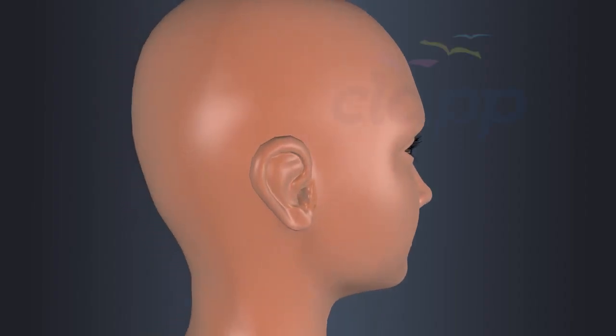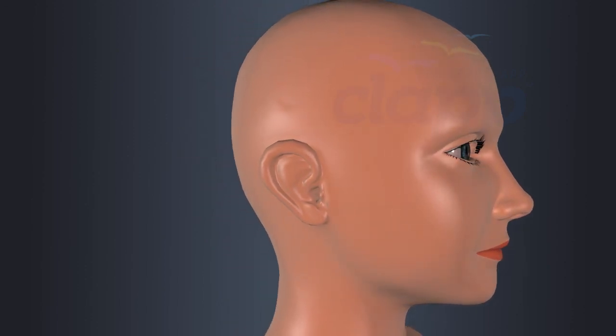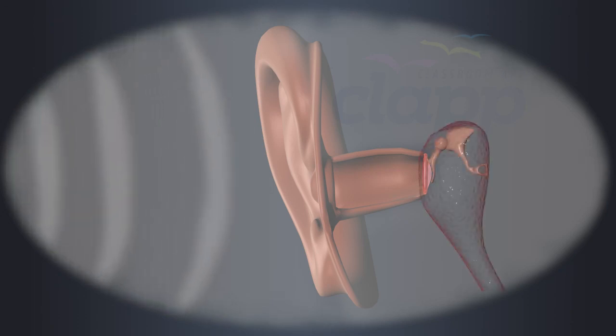Structure of Outer Ear. The outer ear is the visible, external part of the ear that collects sound waves from the environment and directs them towards the middle ear for further processing.